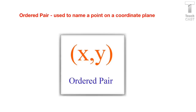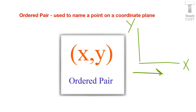Whenever we actually locate a point on the plane, we label it using something we call an ordered pair. An ordered pair just means it's named x and then y. Think of it as x comes before y in the alphabet, so you always want to put the x first. Also, we know the x-axis is horizontal and the y is vertical.